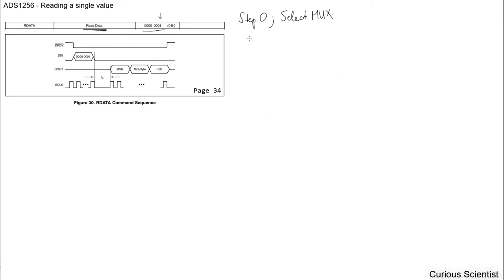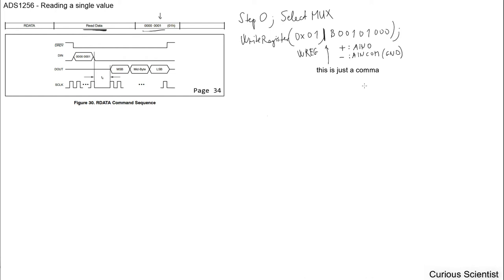Here is how it looks. We have our function, and the first part is basically the WREG command. Then here we have the binary code of the following pins: the positive pin for the input will be AIN0 and the negative pin is basically AINCOM - which is basically the ground.